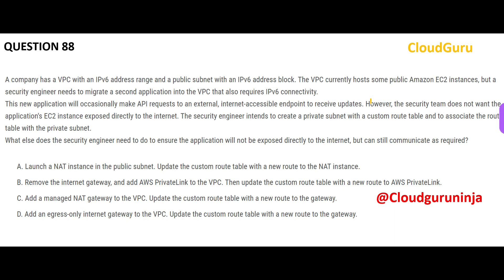Now the next question: you have an EC2 instance in a private subnet and you want to communicate with the internet both ways — to and from — but it should not be exposed to the internet. Option A suggests using a NAT instance, and option C suggests a NAT gateway. The problem with both is that they only support one-way communication — from the private subnet out to the internet. Internet traffic cannot initiate a connection back in. The question says the instance needs to receive updates, meaning it needs an accessible internet endpoint.